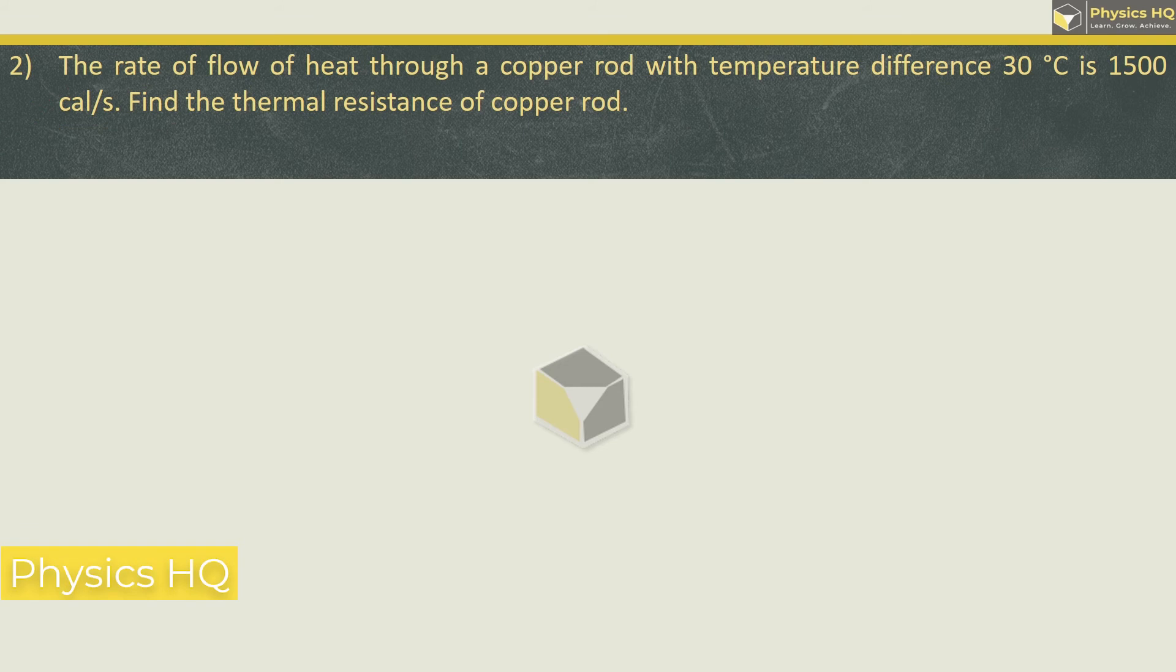The rate of flow of heat through a copper rod with temperature difference 30 degree Celsius is 1500 calories per second. Find the thermal resistance of copper rod. Thermal resistance is very simple formula. Thermal resistance is given by change in temperature upon the rate of flow of heat.